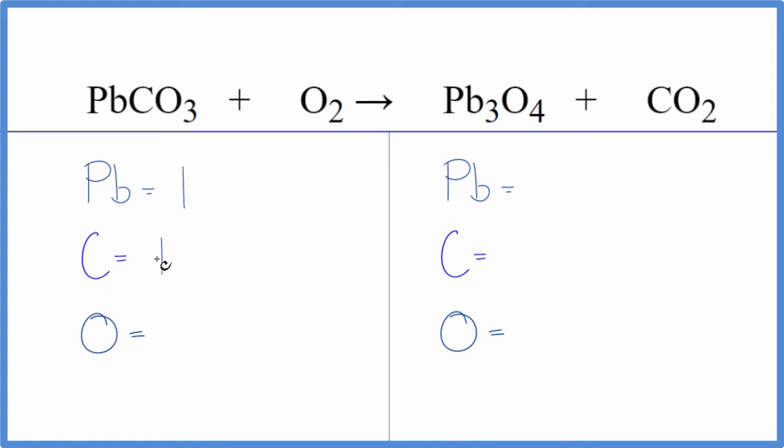We have 1 lead, 1 carbon, and 3 oxygens. But don't forget these 2 oxygens here. So we have 5. Product side, 3 leads, 1 carbon, 4 oxygens. And again, we've got these 2 oxygens out here. So count those as well.